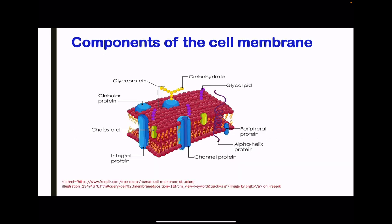Looking at the membrane diagram: we can see the glycoprotein, which is a protein attached to a carbohydrate; the glycolipid, which is a lipid and a carbohydrate; channel proteins that go along the whole membrane transporting substances from one side to the other without needing ATP; cholesterol that allows for rigidity; globular proteins within the membrane; and peripheral proteins which are surface proteins. You need to understand the components as well as the functions of molecules found within the cell membrane.